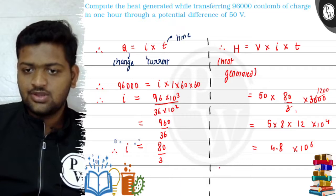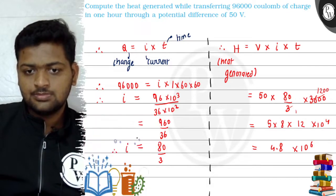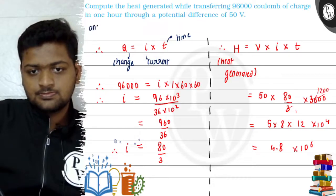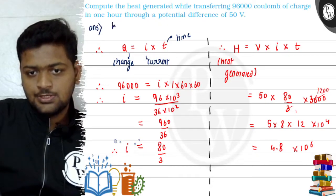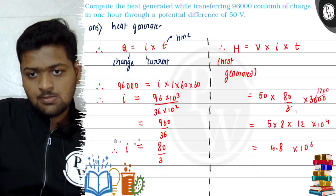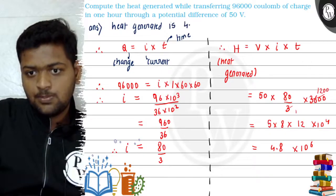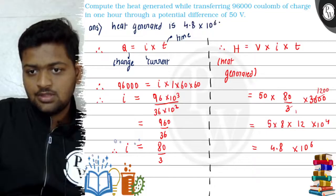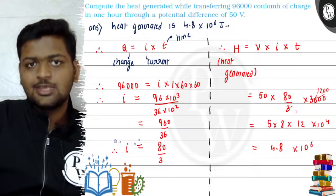Correct. So heat generated, our answer to this question will be 4.8 into 10 to the power 6 Joules. Thank you.